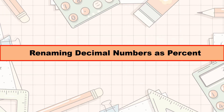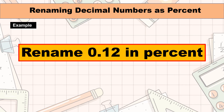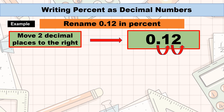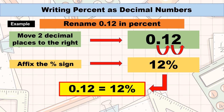Next is how are we going to rename decimal numbers to percent? We can rename decimal numbers to percent using two ways. Number 1, move two decimal places to the right and attach the percent symbol. Or, number 2, multiply the decimal by 100%. Let us try renaming 0.12 in percent notation. What will be the result if we move two decimal places to the right? If we move the decimal point two decimal places to the right, we will have 12. Then we will affix the percent sign. Therefore, 0.12, or 12 hundredths, is 12%.